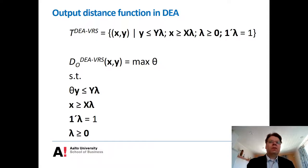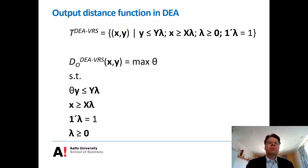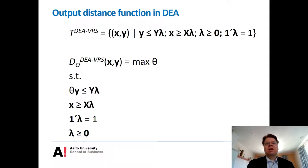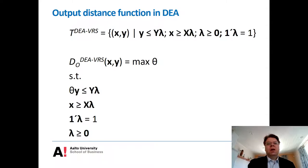The optimal value of theta is commonly interpreted as an output-oriented efficiency score — this is indeed just the output-oriented DEA problem. But as mentioned, this distance function can also be used for characterizing the technology. Having solved for optimal theta, we can find the projected point B on the frontier, and by finding many such points we can characterize the entire frontier. We can also use the multiplier formulation of DEA to study shadow prices of the frontier.